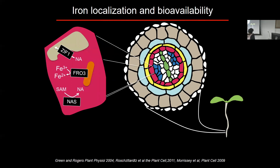We're just now starting to understand what's happening inside specific cell types. We know iron reductases are present in specific cell types — for example, FRO3 is involved in reducing iron in the mitochondria. Nicotianamine binds to iron and facilitates its movement, and ZIF1 facilitates the movement of nicotianamine into the vacuole. There's a lot going on not only in the epidermis but also in more internal cell types.